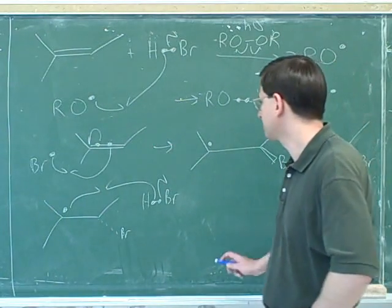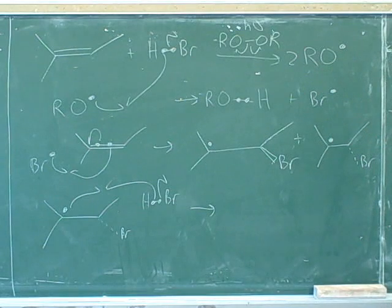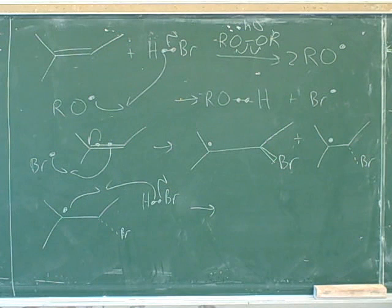And that would give us this. Let's draw the products from that step. Remember, this is a radical mechanism, so there won't be any charges. They'll just be unpaired electrons.